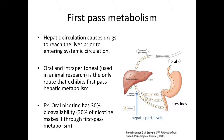The impact of first-pass hepatic metabolism on drugs affects the drug's bioavailability. For example, only 30% of nicotine survives first-pass metabolism into the systemic circulation. Thus, the bioavailability of nicotine is 30%.